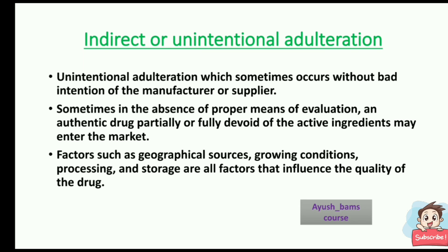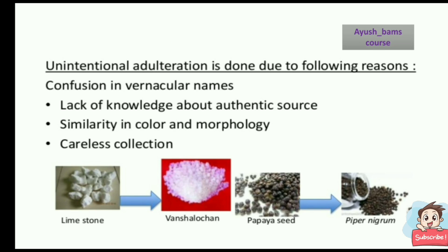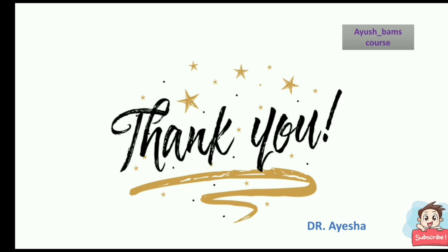Indirect or unintentional adulteration occurs without bad intention of the manufacturer or supplier. In the absence of proper means of evaluation, an authentic drug partially or fully devoid of active ingredients may enter the market. Factors such as geographical sources, growing conditions, processing, and storage all influence drug quality. Unintentional adulteration occurs due to confusion in vernacular names, lack of knowledge about authentic source, similarity in color and morphology, and careless collection.